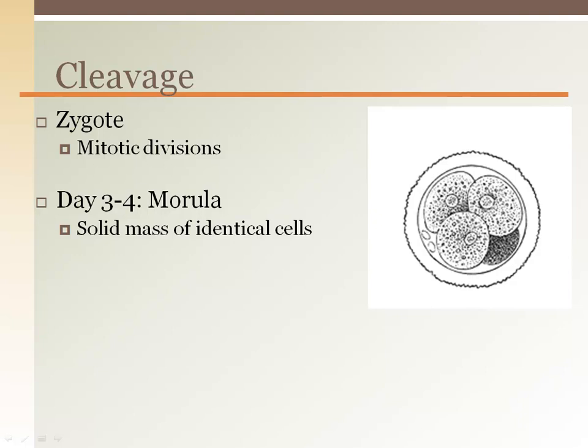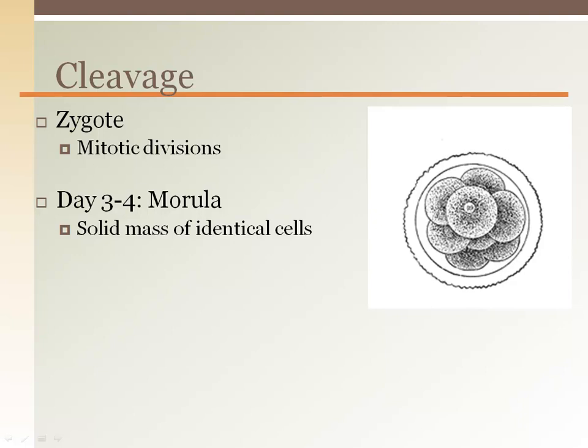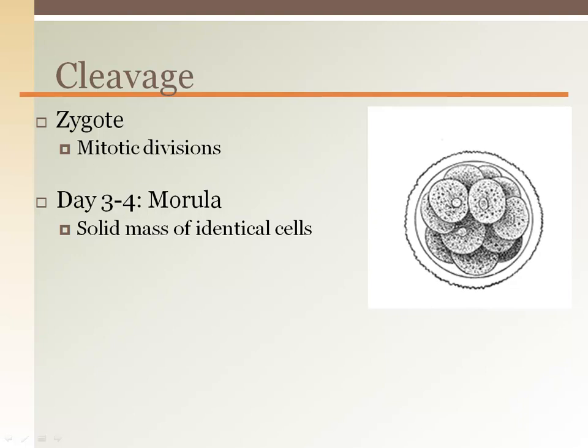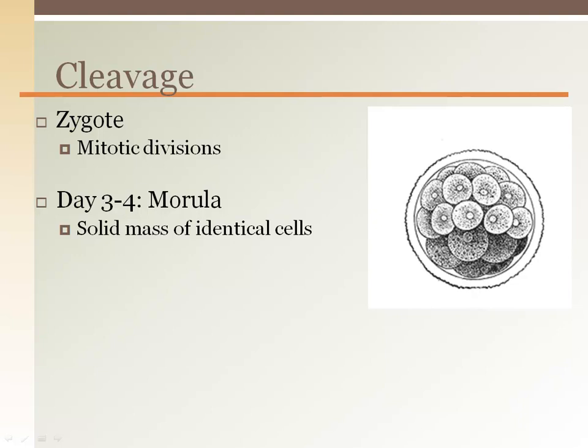The zygote immediately begins cleavage or mitotic cell division, exponentially increasing the number of cells to form a cluster called a morula. The most important point with development of the pre-embryo, i.e. before implantation, in the first five to seven days is the rapidly increasing number of cells without a corresponding increase in size.